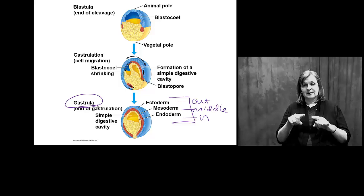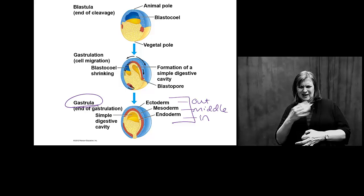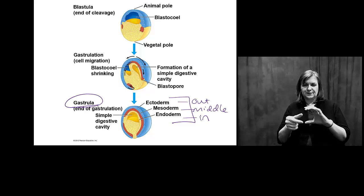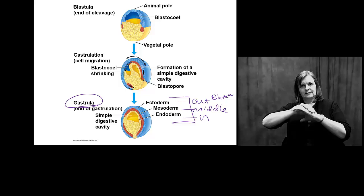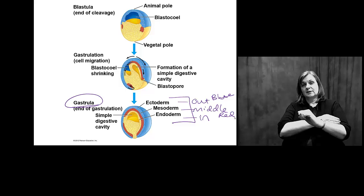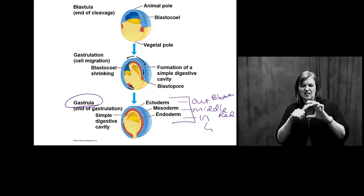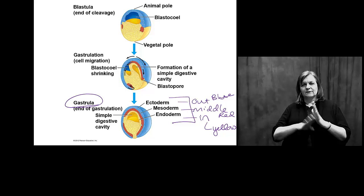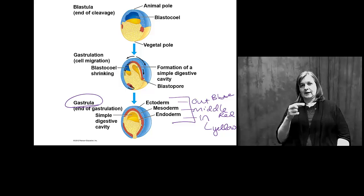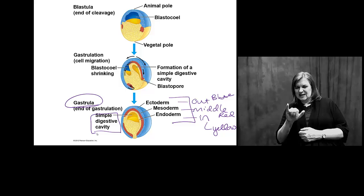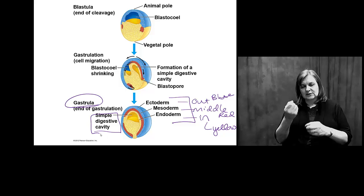The gastrula is actually starting to have a digestive tract. I know to you this looks like a blue ball of cells with some red and yellow in the middle. The blue is what will be the ectoderm — your skin and nervous system. The red in the middle is going to be associated with muscles. And the inside is yellow in this case, representing the development of the endoderm becoming all of those internal organs. This simple digestive cavity may just look like a hole in a bunch of yellow cells, but I promise soon this will make more sense.